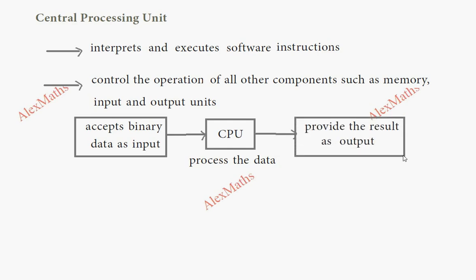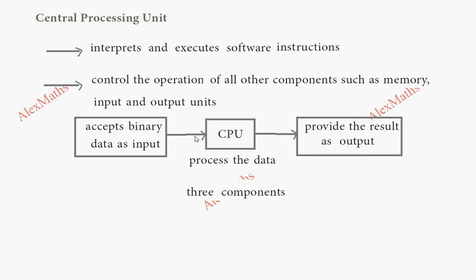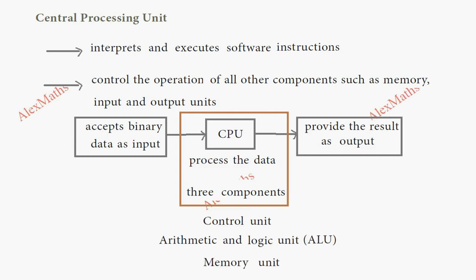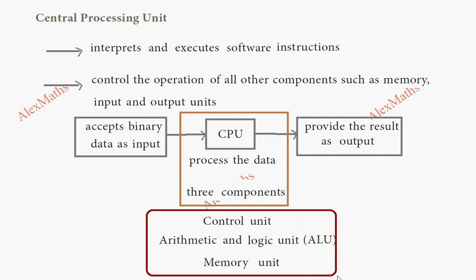The result comes as output from the central processing unit. The CPU has three components: one is the control unit, the second is the arithmetic and logic unit — the ALU — and the third is the memory unit.